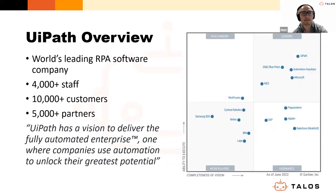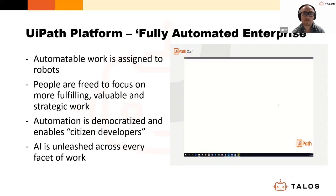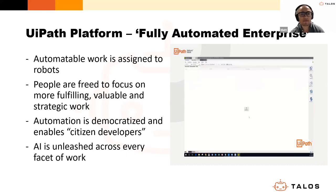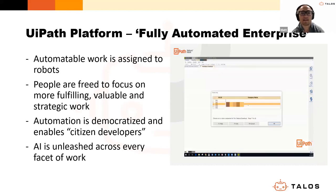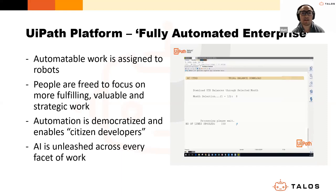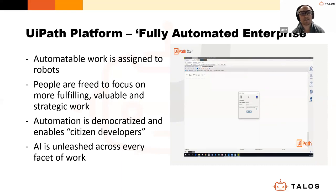That position is not really in doubt when you consider UiPath's reach: over 4,000 staff, 10,000 customers, and 5,000 partners — well and truly the global RPA business. But it's also their unique vision for the fully automated enterprise. In this vision, all automatable work is assigned to robots; people are free to focus on more fulfilling, valuable, and strategic work. Staff still play an integral role — their talents aren't lost. Automation is democratized, enabling citizen developers so automation becomes self-propelling from within the business, and AI is unleashed across every facet of work.